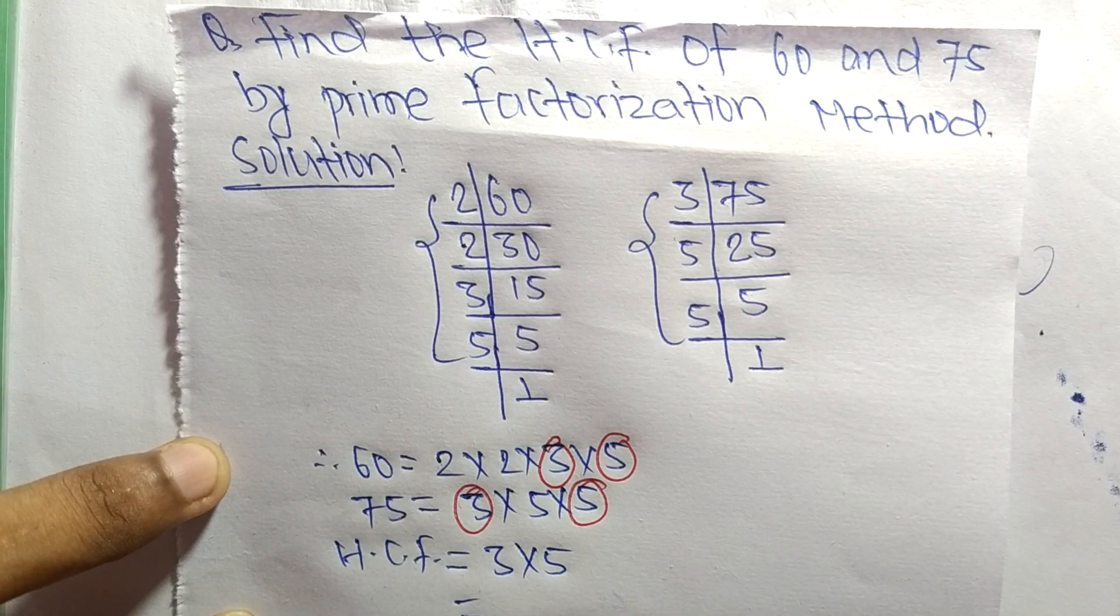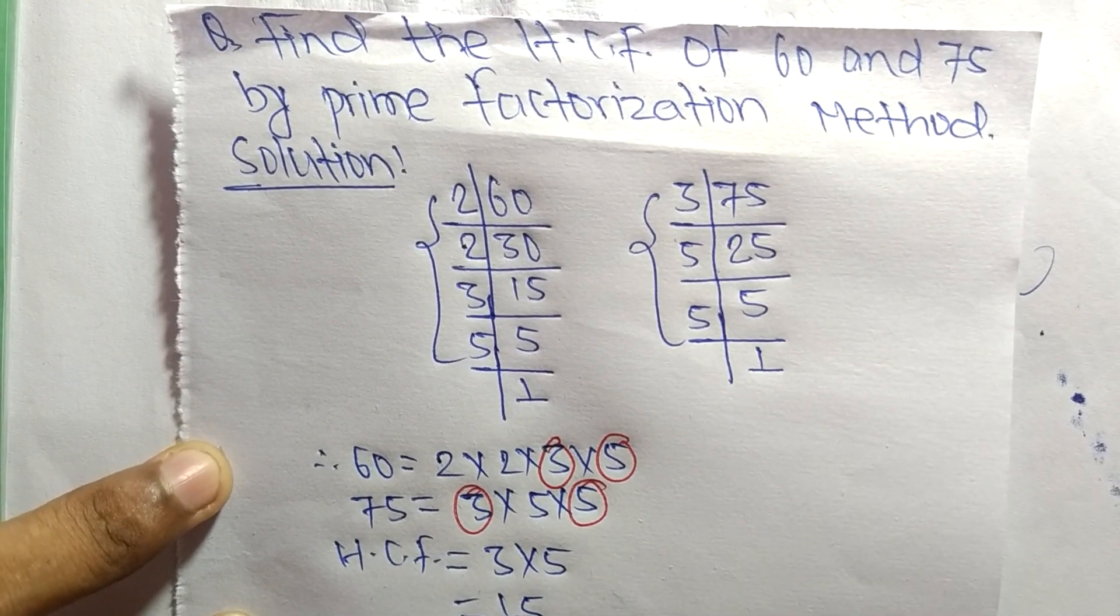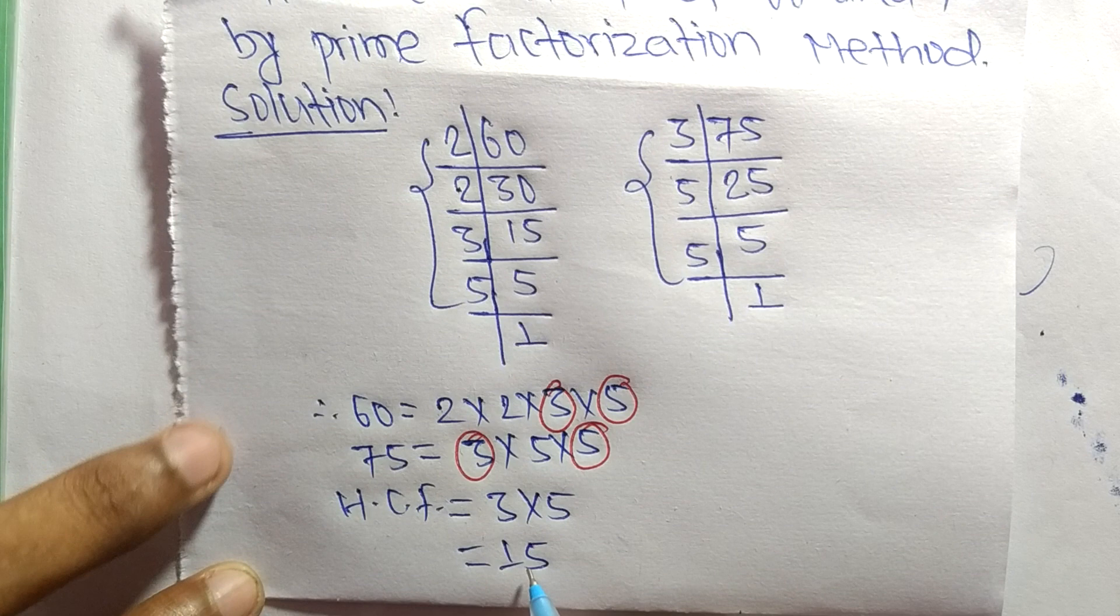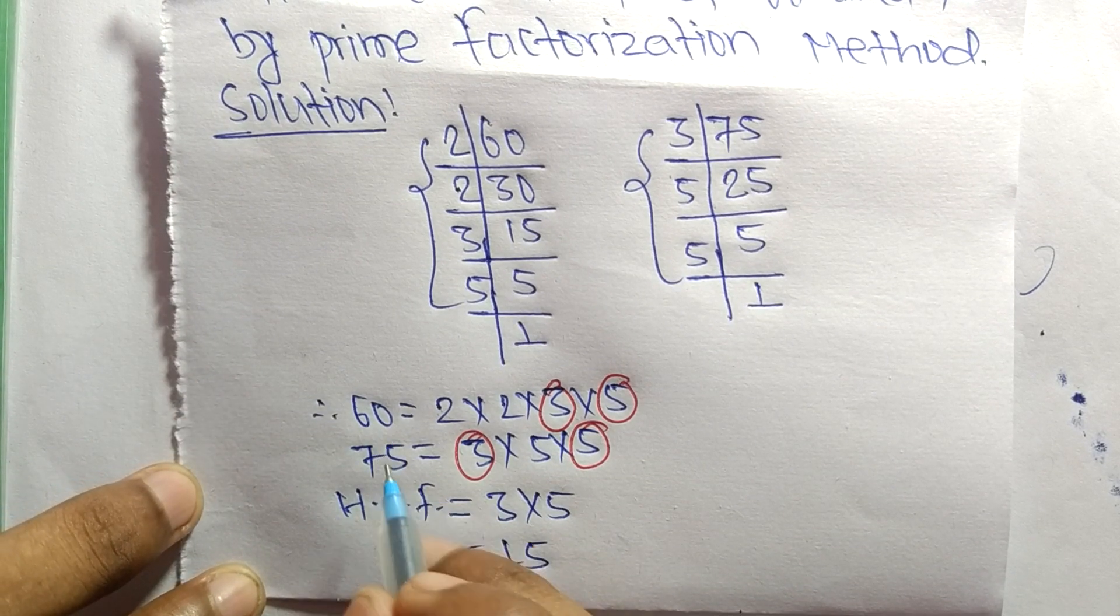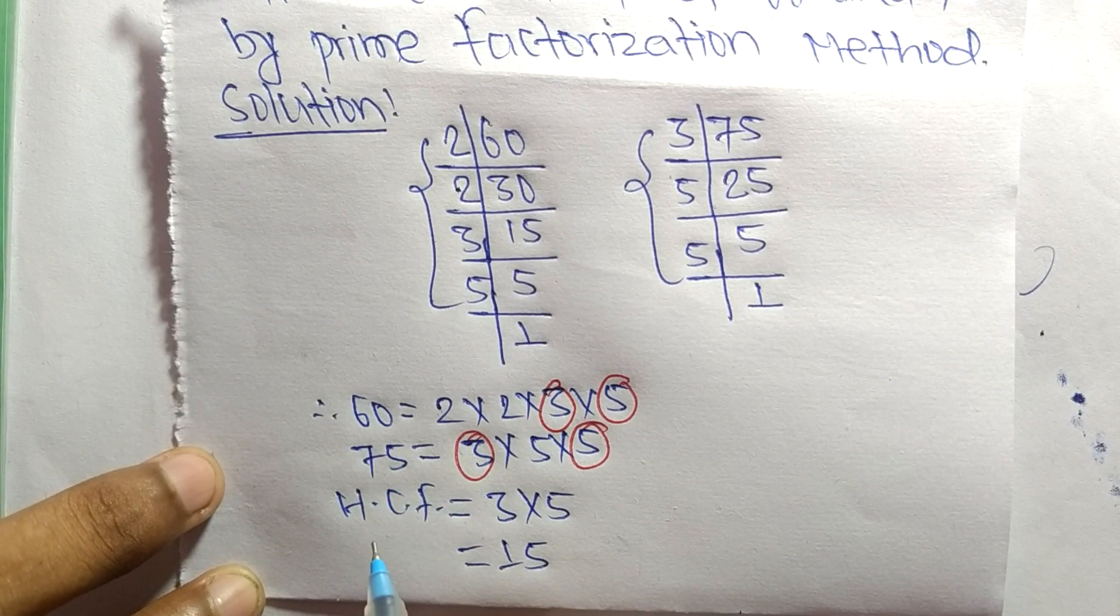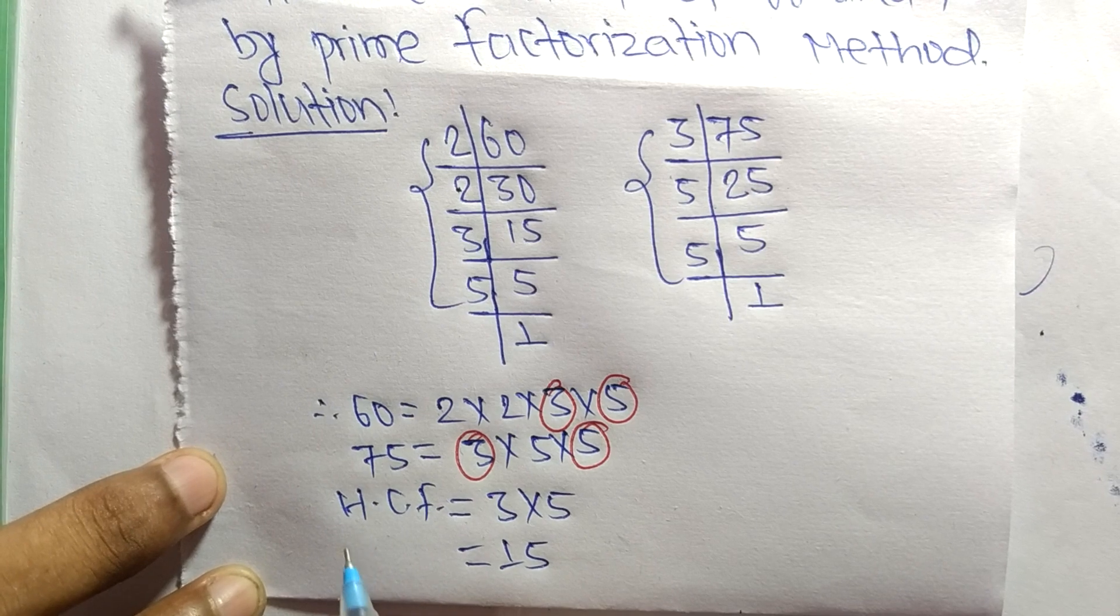It is 3 times 5, which equals 15. So 15 is the HCF of 60 and 75. That's all for today, and thanks for watching.